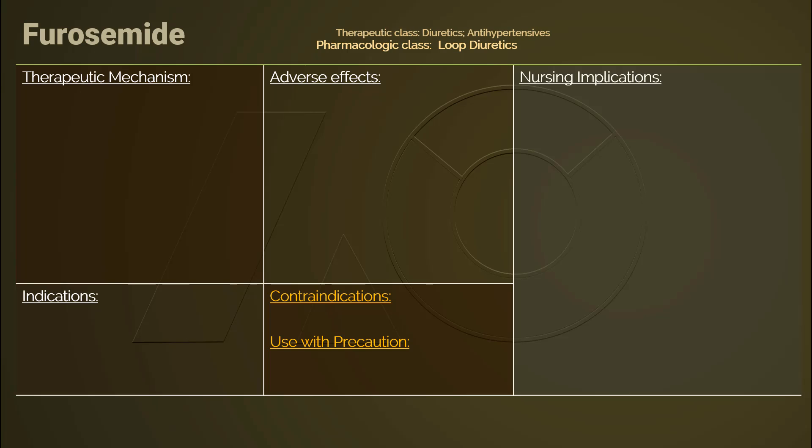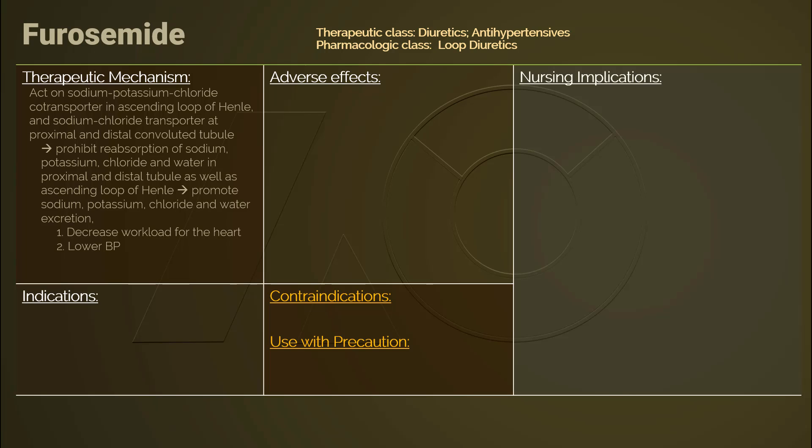Furosemide pharmacologically is a loop diuretic; therapeutically it is an antihypertensive. It affects almost the entire nephron, including the proximal and distal convoluted tubules, yet most importantly it acts on the ascending loop of Henle. It interferes with the sodium-potassium-chloride co-transporter and sodium-chloride transporter, leading to excretion of these ions. Potassium follows the diuresis. It also causes loss of calcium and magnesium.